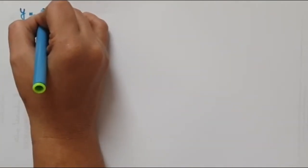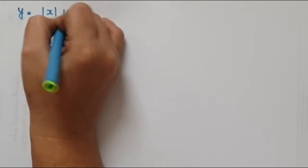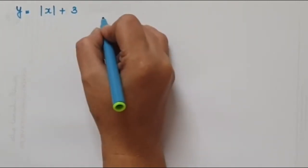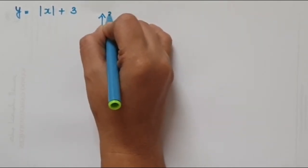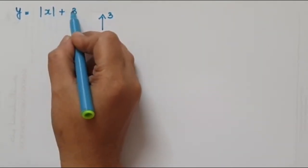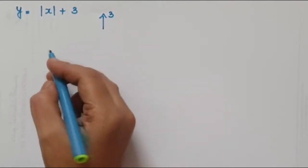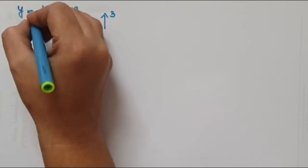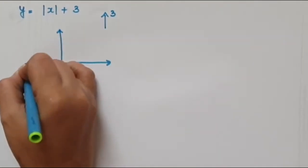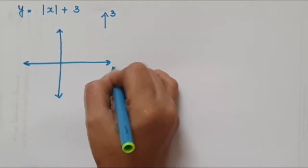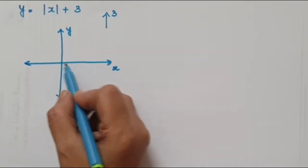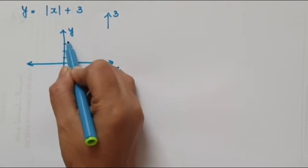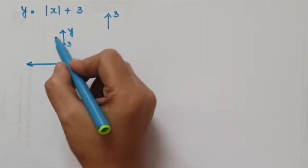Now for the graph of y = |x| + 3, the 3 is outside the absolute value, so it moves upward 3 blocks. The graph shifts vertically upward by 3 units. The slope here — the number in front of the absolute value — is 1.